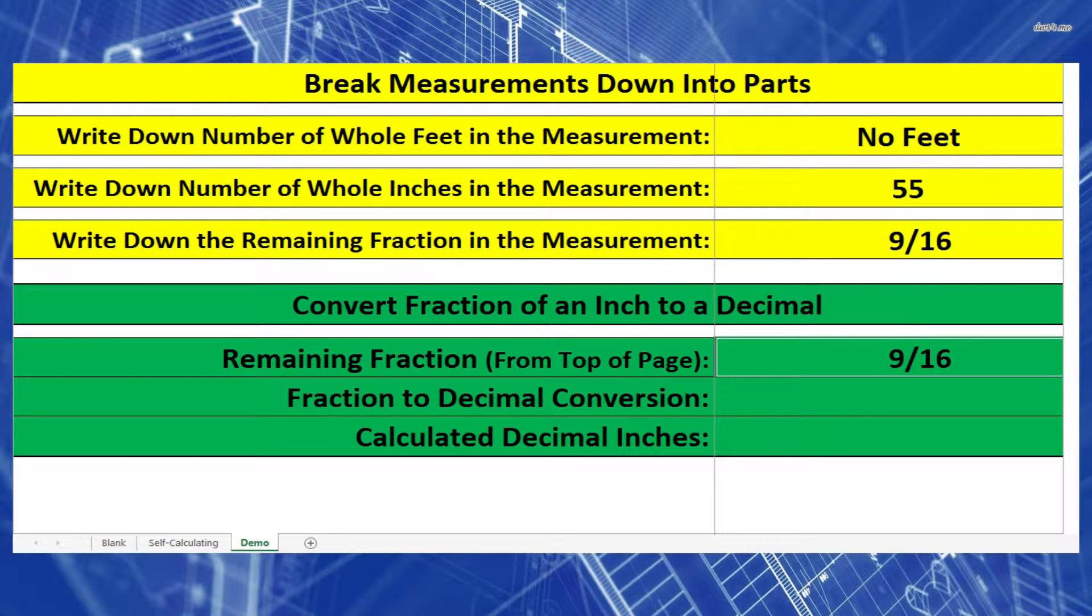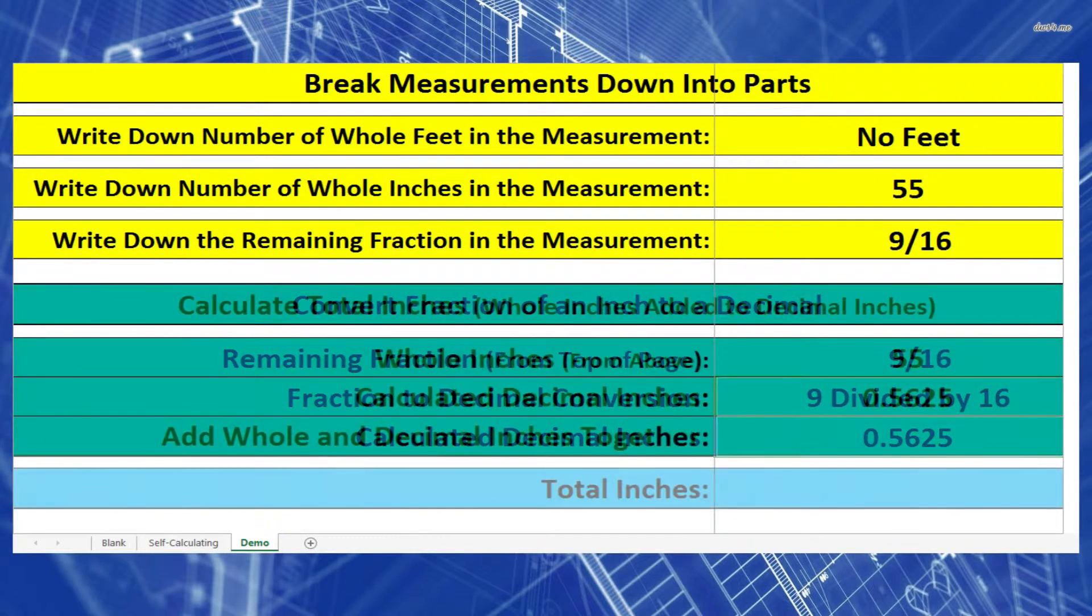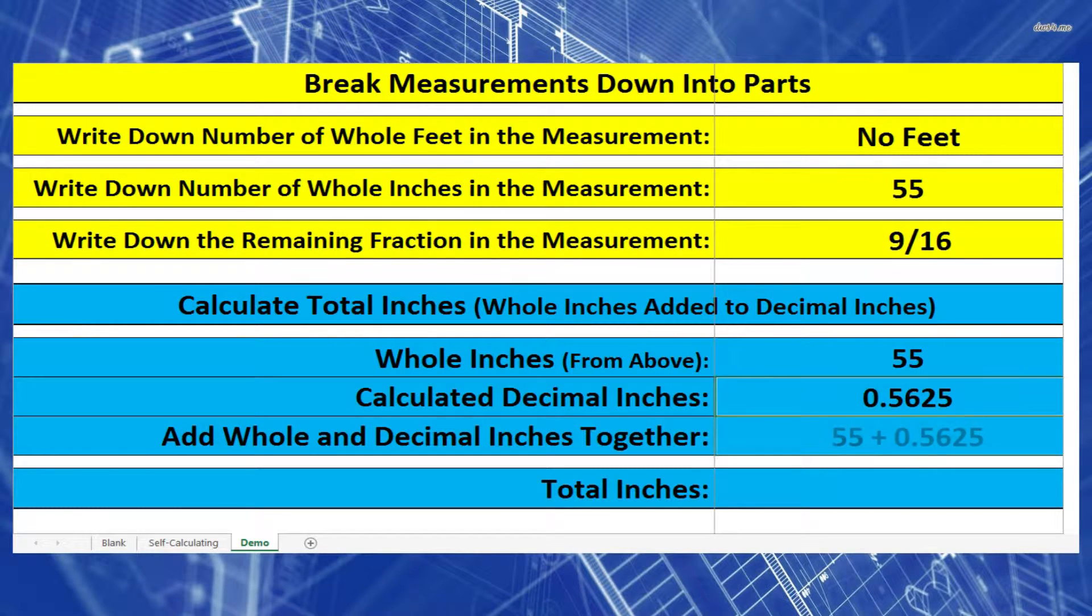Let's start with our fractions of an inch. We have 9 sixteenths. Let's convert this into decimal inches. To do this, we take the top, 9, and divide it by the bottom number, 16. 9 divided by 16 equals 0.5625 inches. Now let's take that and add that to our whole inches, 55. So 55 plus 0.5625 inches equals 55.5625 inches.